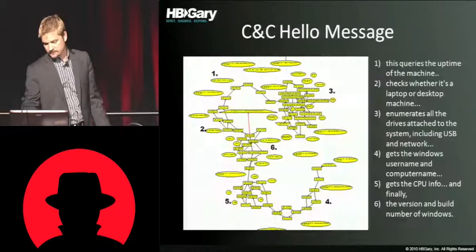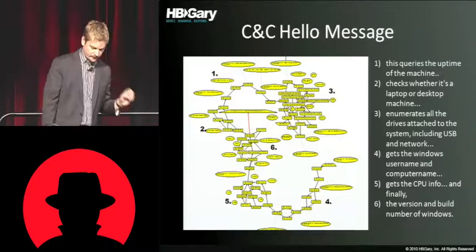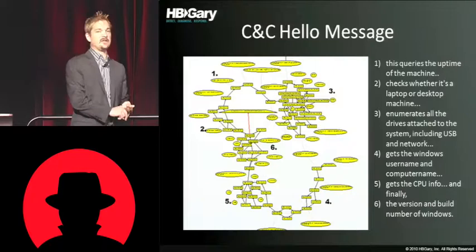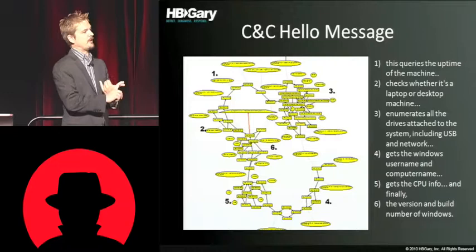Here's actually a graph showing all of that behavior. This is out of one malware — this is a really great fingerprint. First it queries the uptime of the machine, and then it checks the power settings to determine whether or not the machine is a desktop or a laptop. Then it enumerates all the drives, including anything that's external storage as well, like a USB stick. It gets the Windows username and computer name, CPU information, and then the version and build number of Windows. All that's packaged up into one packet and sent up to the C2 server.